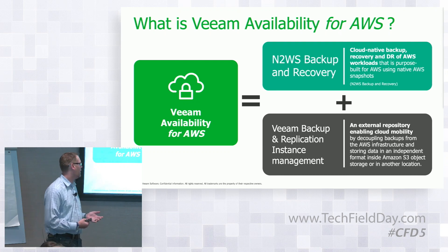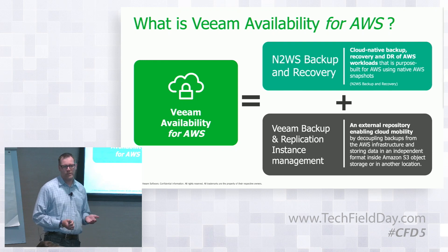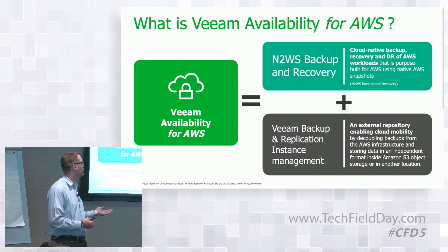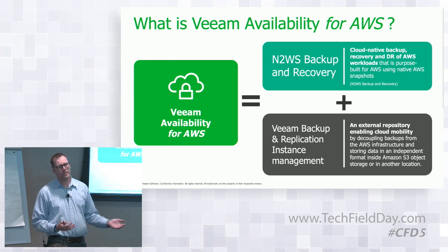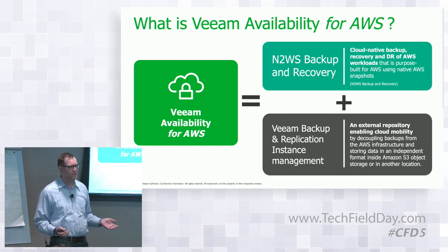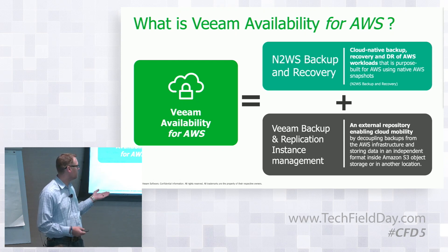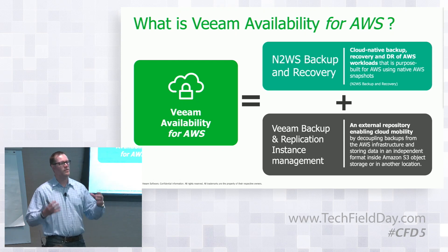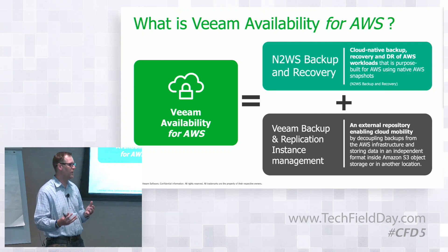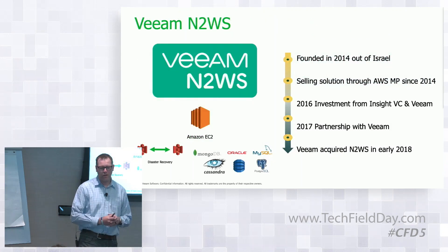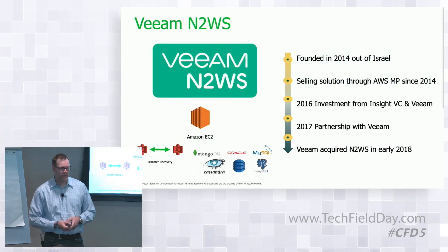Michael is going to follow on with a demo around the external repository feature within Veeam Backup and Replication. Essentially, we take N2WS Backup and Recovery, deploy it in AWS to manage all the instances, and then using the external repository feature in VBR, we're able to manage those backups in AWS and manipulate them for on-premises as well.